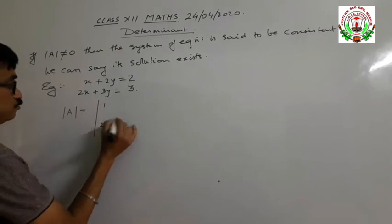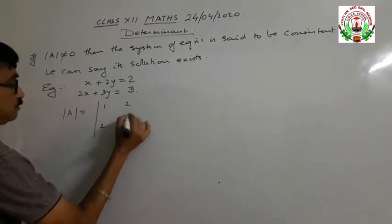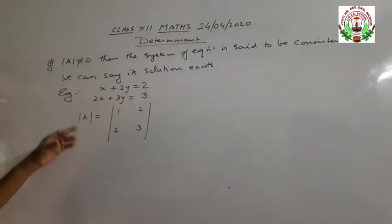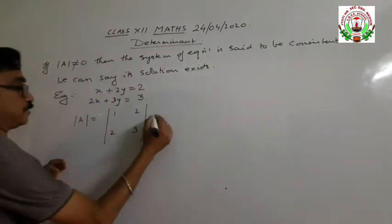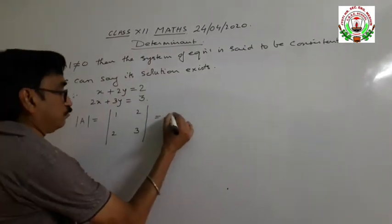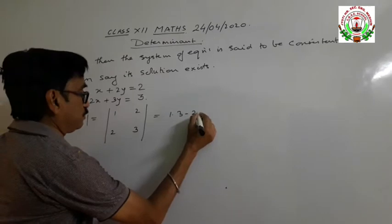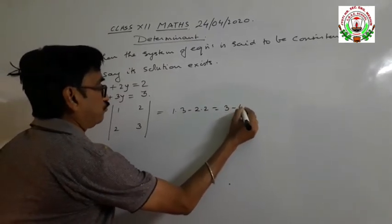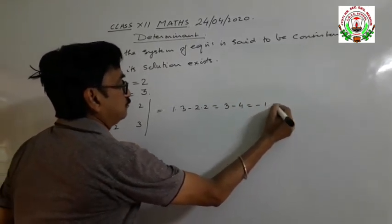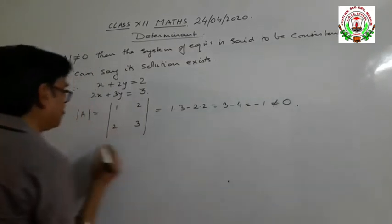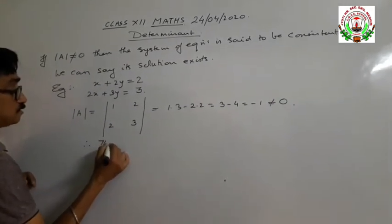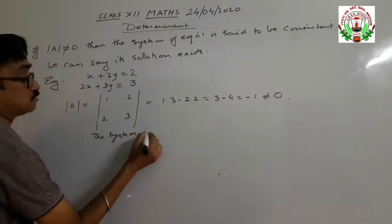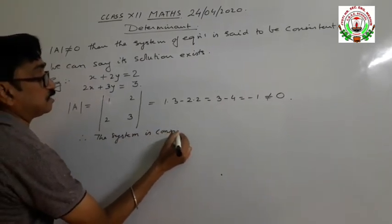Consider the matrix with elements 1, 2, 2, 3. We interpret its value as a 2 by 2 determinant: 1 into 3 minus 2 into 2, that is 3 minus 4, equal to minus 1, which is not equal to 0. Therefore the system is consistent.